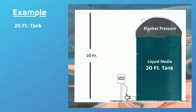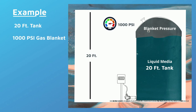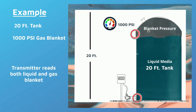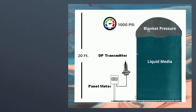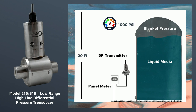For example, if a tank is 20 feet tall and there is a 1000 psi pressurized gas blanket on top, putting a hydrostatic level sensor at the bottom of the tank would measure the 20 feet of water column as well as the 1000 psi of blanket pressure, giving you a combined pressure of both the liquid and gas blanket. In order to subtract the gas blanket pressure from the liquid level pressure, you need to know the gas blanket pressure. To do this you can use a differential transmitter and plumb the high side to the bottom of the tank and the low side to the top where the gas blanket pressure is located.